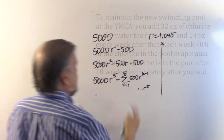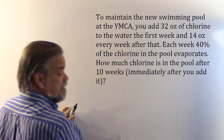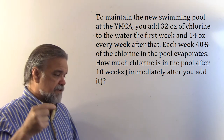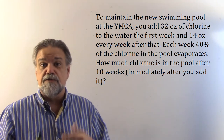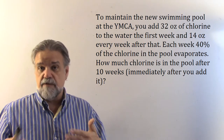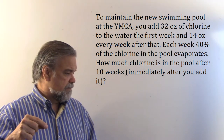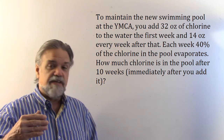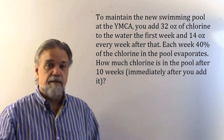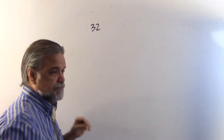Our next problem has nothing to do with money — it has to do with chlorine. To maintain a new swimming pool, you add 32 ounces of chlorine the first week and 14 ounces every week after that. The 32 ounces is like a booster. Each week, 40% of the chlorine in the pool evaporates — that's why we keep adding more. How much chlorine is in the pool after 10 weeks? We're adding 14 ounces at the end of every week, and we want to know how much is there at the end of 10 weeks right after we add it.